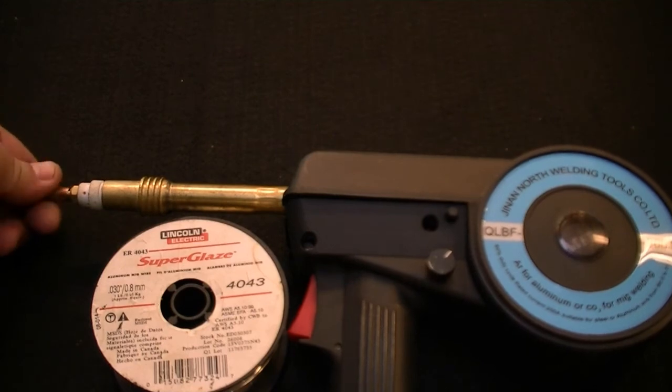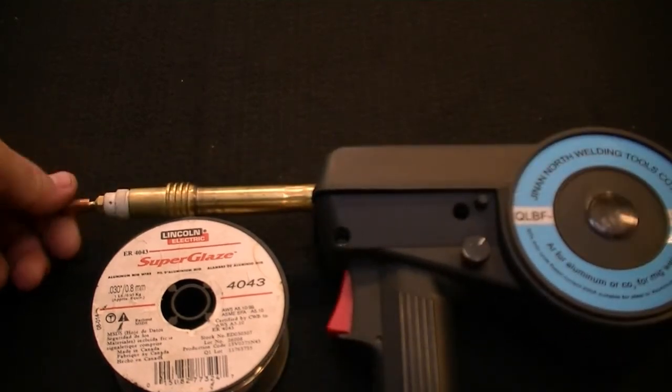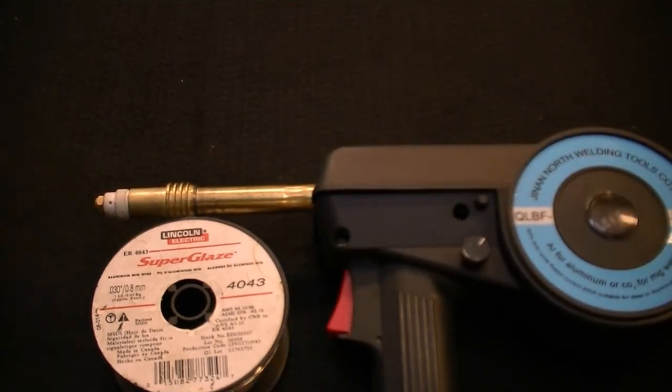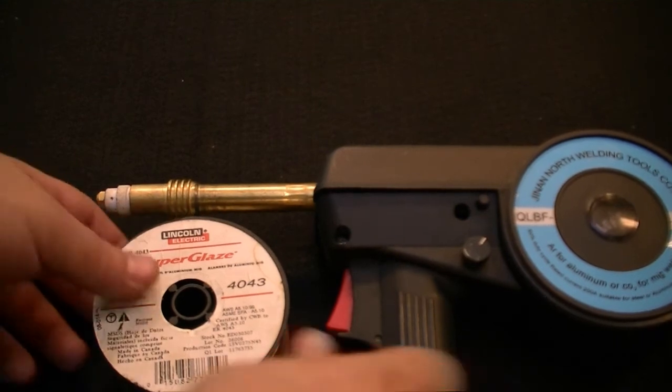Almost any good quality MIG wire can be used in the spool gun. To install the wire, remove the gas cone and the contact tip.